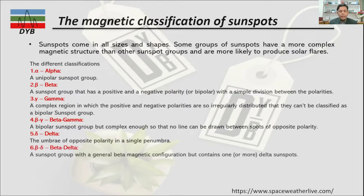The sixth type is Beta-Delta — a sunspot group with a general Beta magnetic configuration but containing one or more Delta sunspots. It is essentially a combination of Beta and Delta.